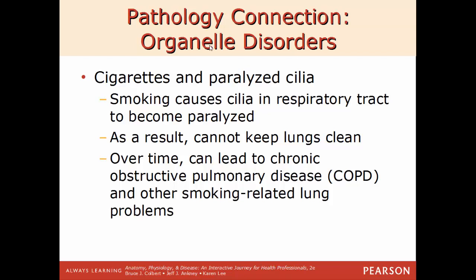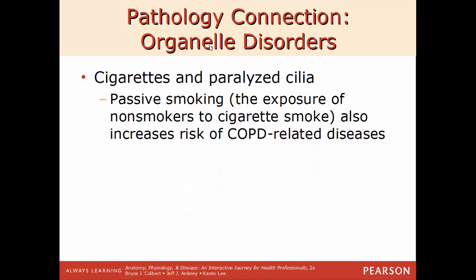Another pathology connection: cigarettes and paralyzed cilia. For people who smoke, the cilia in the respiratory tract often become paralyzed. Normally, cilia move debris up the trachea so it can be swallowed and dissolved. When cilia can't function, people develop the smoker's cough as they work harder to clear their airways. The more and longer a person smokes, the more serious this becomes. Over time it can lead to COPD — chronic obstructive pulmonary disease. Even passive exposure to cigarette smoke increases the risk for COPD-related diseases.